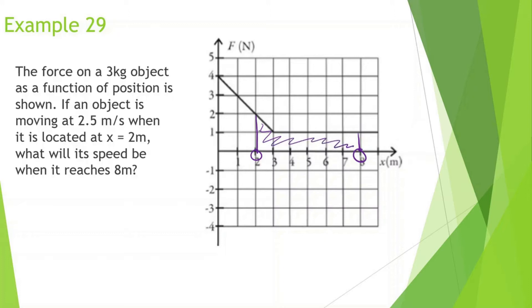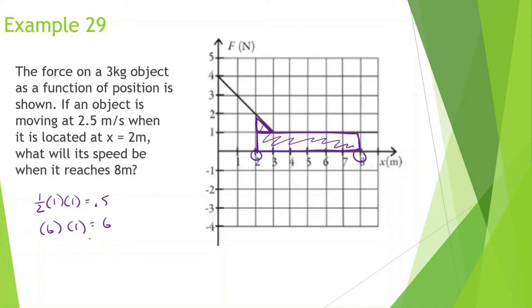There are a few ways to do this. I'm going to find the area of the first triangle: one-half base times height, where base is 1 and height is 1, giving 0.5. For the rectangular piece, base times height: base is 6, height is 1, giving 6. So the total work is 6.5 joules.